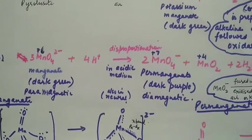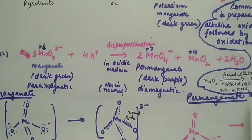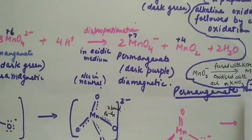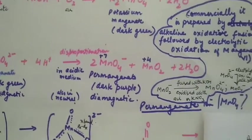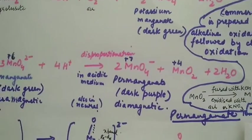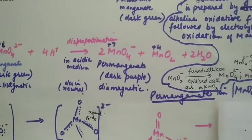Not only in acidic medium but also in neutral medium, manganate can be converted to permanganate. Once the permanganate solution is obtained, it is concentrated and cooled to get dark purple colored permanganate crystals.